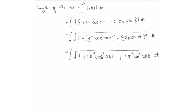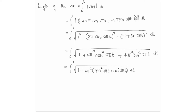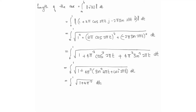Expanding: 1 + 4π²·cos²(2πt) + 4π²·sin²(2πt). Since (−2π)² = 4π², the last term is positive 4π²·sin²(2πt). Factoring out 4π²: we have 1 + 4π²(sin²(2πt) + cos²(2πt)). Using the identity sin²θ + cos²θ = 1, this simplifies to 1 + 4π². So the integral becomes integral from 0 to 1 of the square root of 1 + 4π² dt.